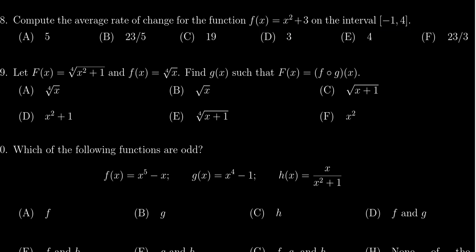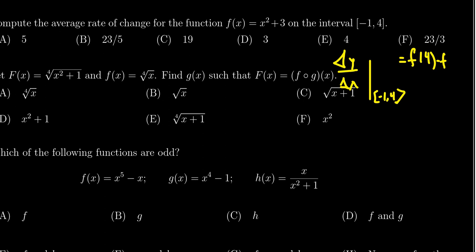To find the average rate of change, Δy/Δx evaluated from -1 to 4, we use the formula where we take f(4) minus f(-1)